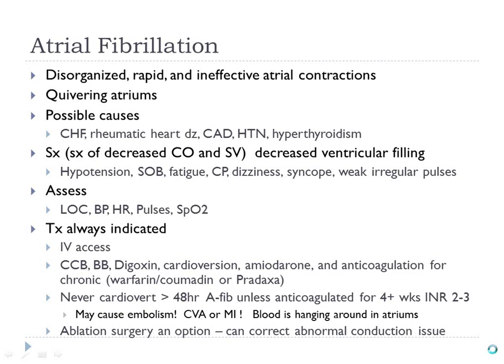The atria are quivering. Here are some causes — hyperthyroidism is notable: the most common dysrhythmia with hyperthyroidism is AFib, so remember those two go together. If the patient is symptomatic, they will have signs of decreased cardiac output because there's deficient preload — the atria are not pumping blood down into the ventricles. What does get down there usually happens mostly by gravity.